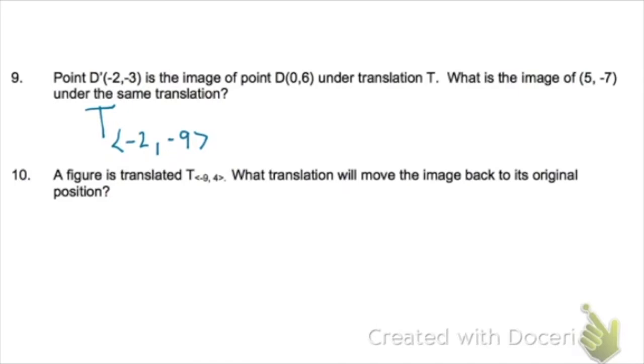Point D prime is the image of the point D(0,6), so it went from D to D prime, you go back 2 and back 9. So if you apply that same transformation to the image of (5,7), if it goes back 2, it becomes 3, and if -7 goes back 9, it goes to -16.